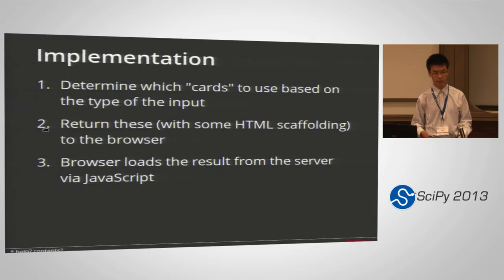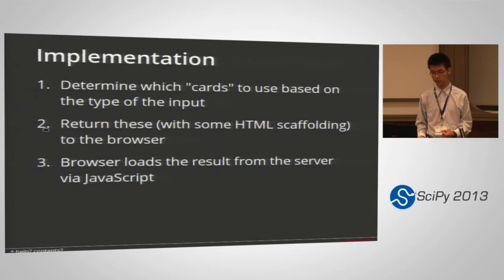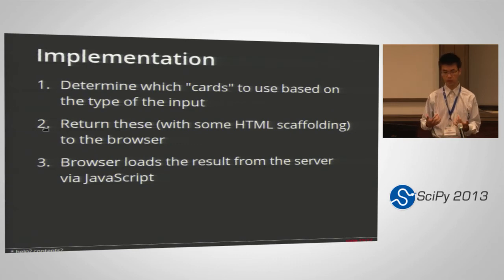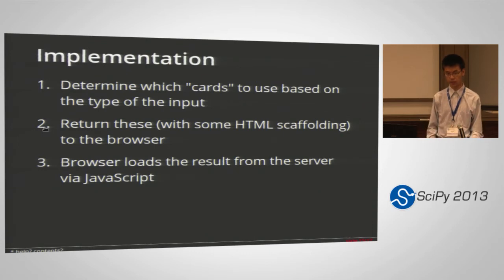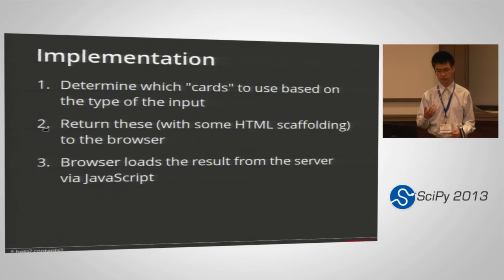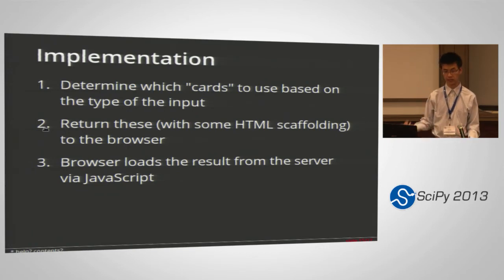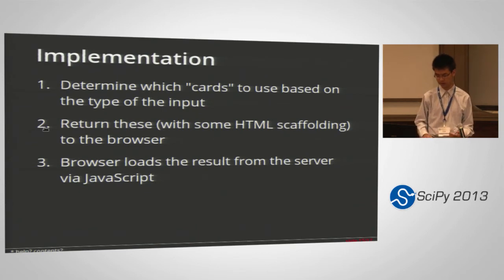For Gamma, the implementation is pretty simple. The most complicated part is probably the parsing. We take your input, parse it, and based on the type of input, tell the browser which types of results it should fetch from the server. The browser then fetches the results, so each result gets its own 60 seconds of execution time on the server — that's how we get around the execution time limit.